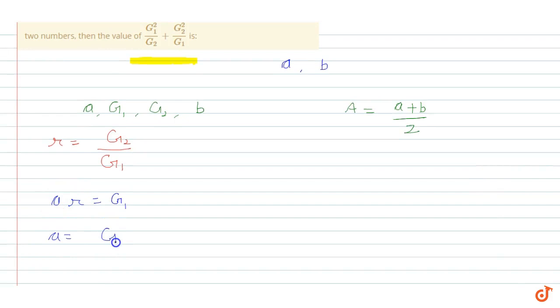Similarly, b's value will be, we know b is equal to the fourth term in GP, which is ar cube. So b's value is g2... sorry, we need to determine b's value.